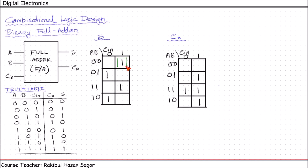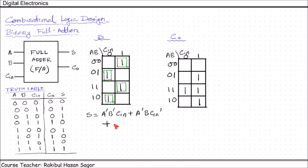Looking at the K-map results: we have one single box, another single box, and another single box for the S output. S can be written as: A'B'C_in + A'BC_in' + ABC_in + AB'C_in'. By algebraic manipulation, this simplifies to A XOR B XOR C_in. I want all of you to prove this using algebraic manipulation. For C0, we have groups: A and B (true for both C_in=0 and C_in=1), B and C_in, and A and C_in.